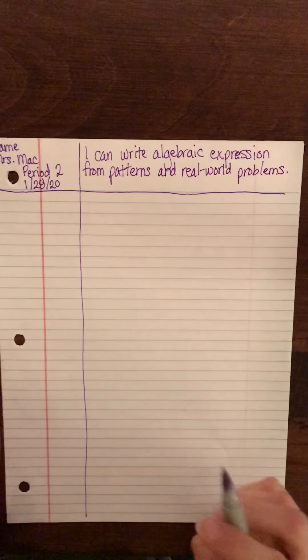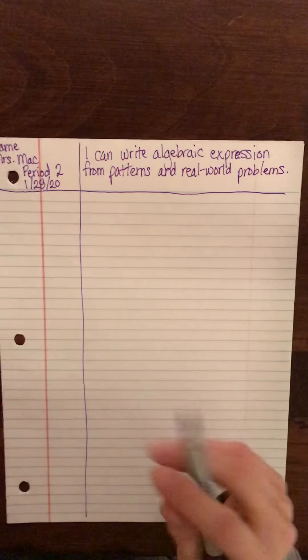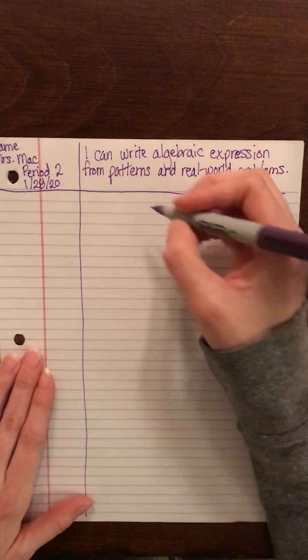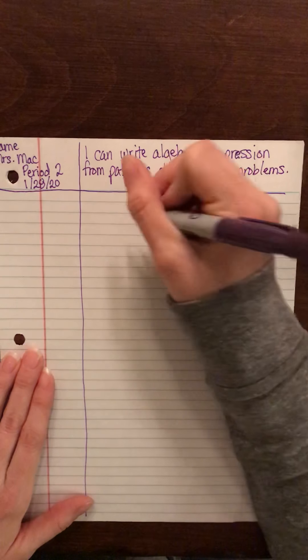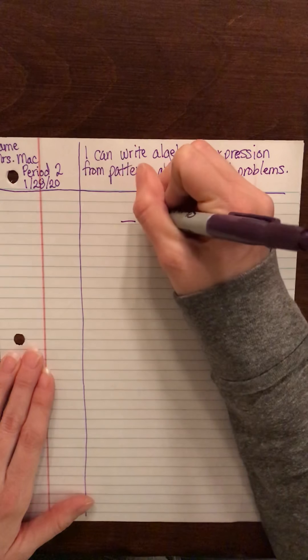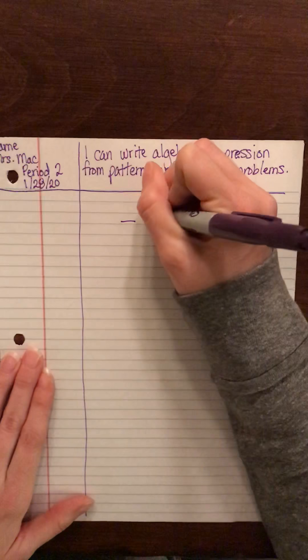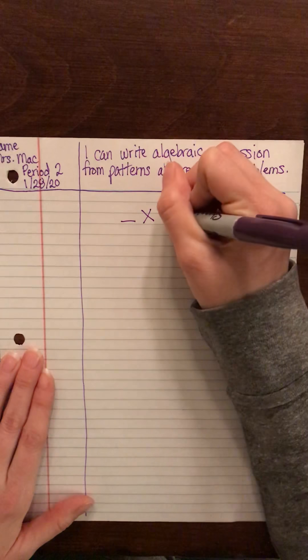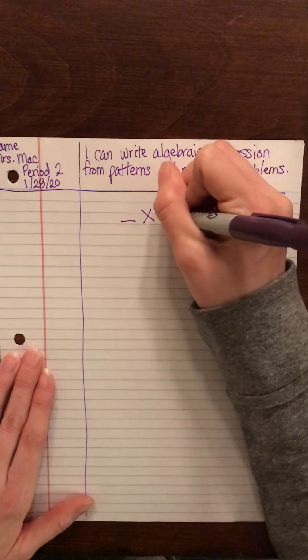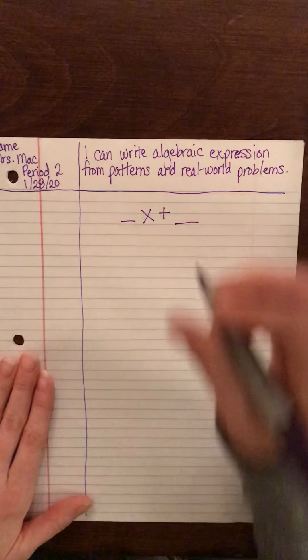So first of all, I want to just lay out the format that we're gonna be dealing with. You're gonna have some number times a variable, we'll just call it x right now, but the variable can change depending on which situation we're talking about, plus some number.